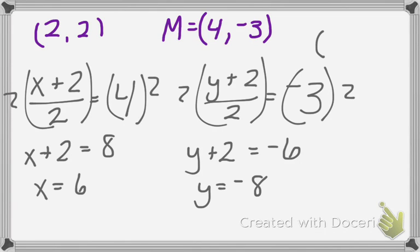So our other endpoint has the coordinates of 6, negative 8, which from 2 to 4 to 6 and then 2 to negative 2 to negative 8, kind of makes sense. So that's the midpoint formula.